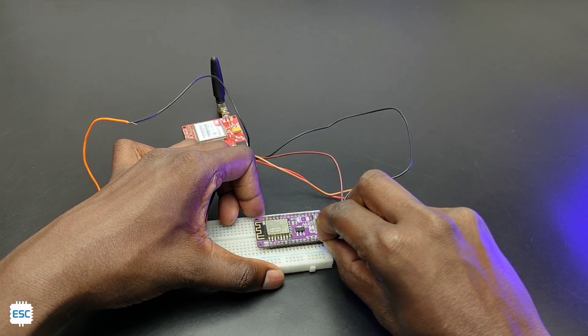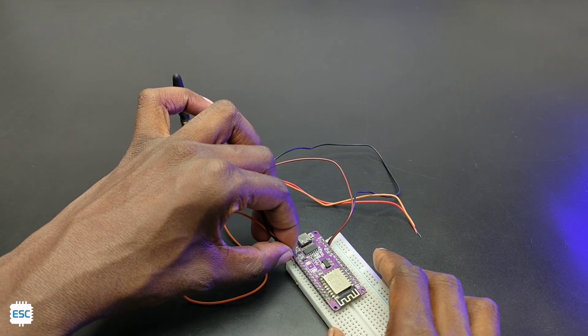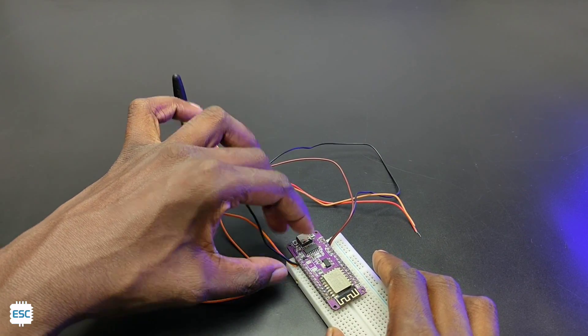Now let's connect everything, connect the VCC pin of SIM900 module to VIN pin of NodeMCU, grounds to ground of NodeMCU.